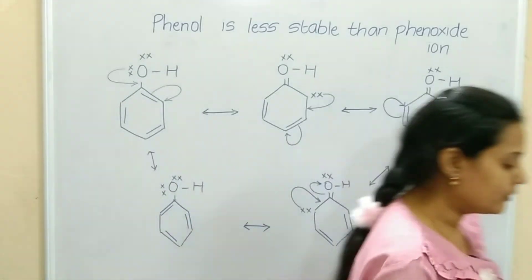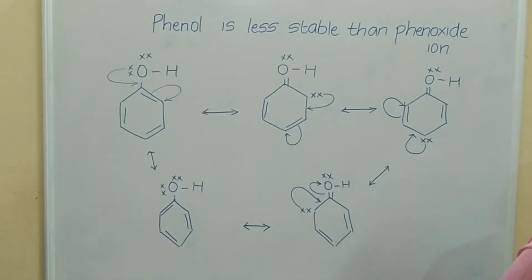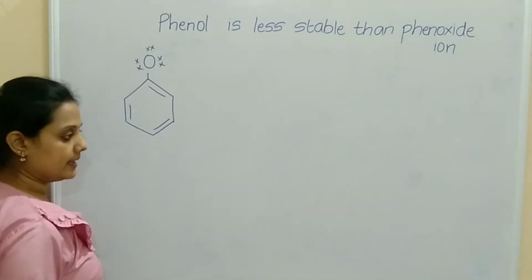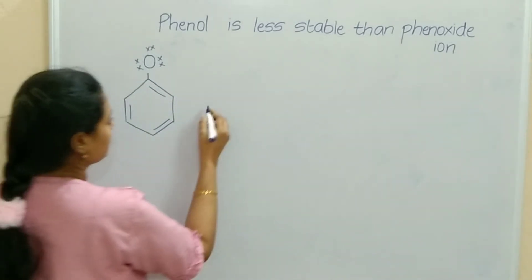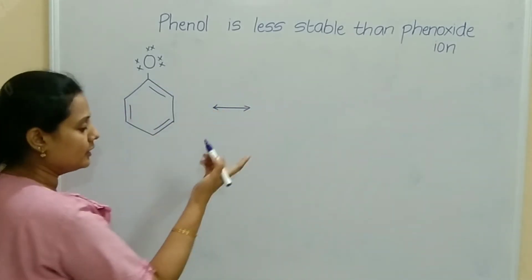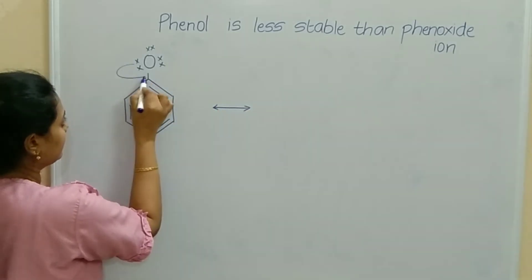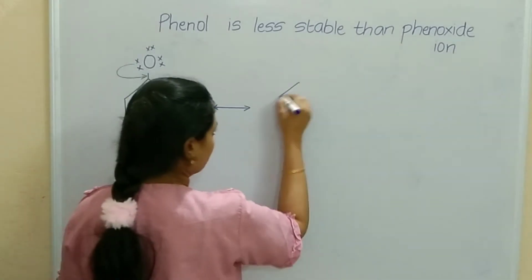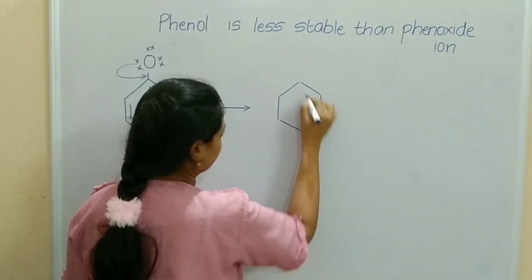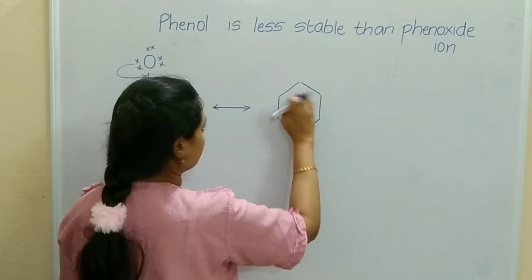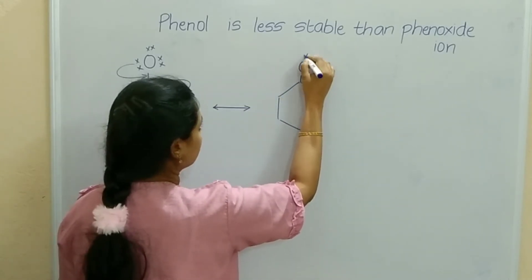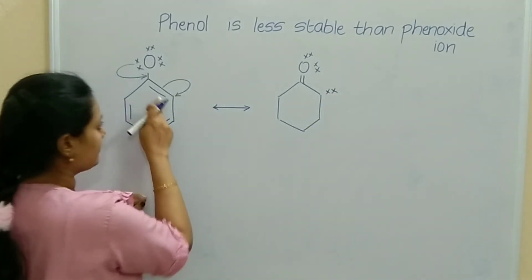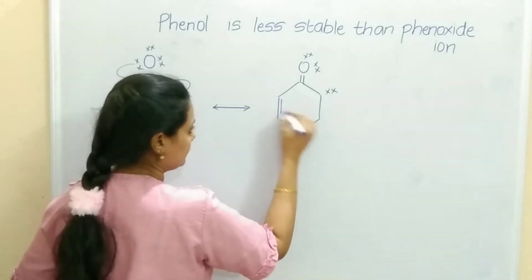We will also draw the resonating structures for phenoxide ion. The phenoxide ion has three lone pairs of electrons on oxygen. We will start with one of the lone pairs — a double bond forms, and this will come to the corner as electrons. In the first resonating structure, there is a double bond, oxygen with two lone pairs of electrons, and here one lone pair as the bond forms the electron, with the remaining two bonds as they are.